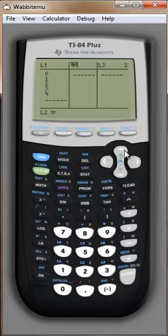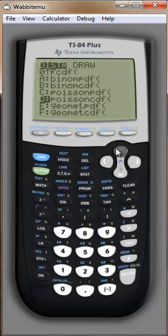I go up into list 2 and scroll up so that I'm on L2, and here's where the trick comes in. I'm going over to distributions and to binomial PDF. Enter.